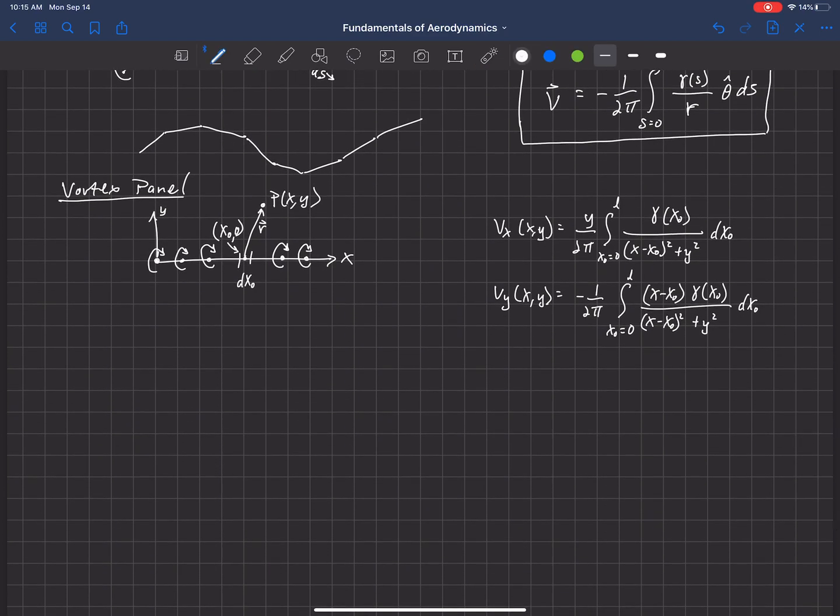That means we're going to have a γ₁ at this end of the panel and a γ₂ at that end, and we're going to assume that γ varies linearly.